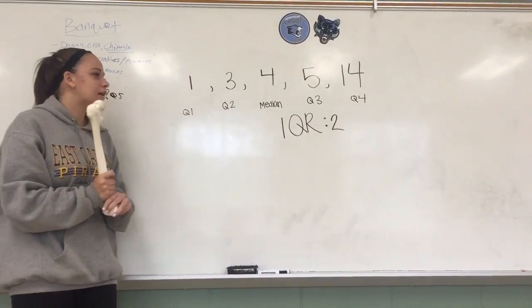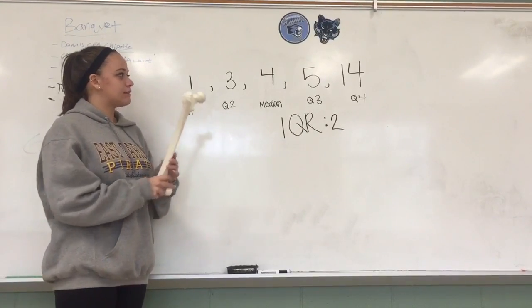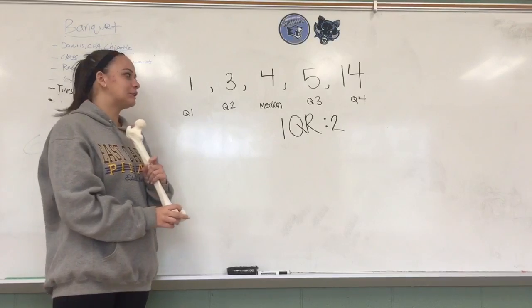And then we also have to calculate the interquartile range, which is the IQR. That is 2. All you have to do for that is take Q3 and Q2, and then subtract the lower one from Q3.